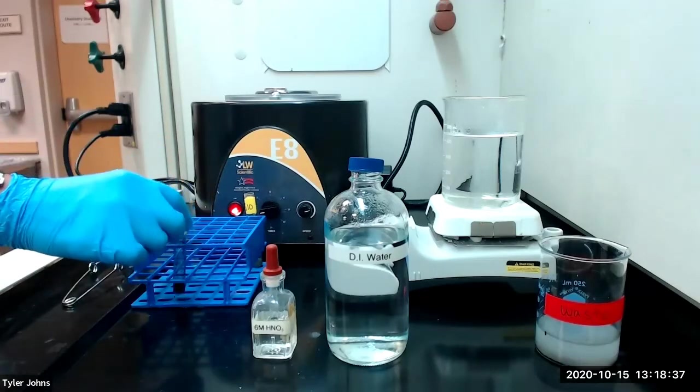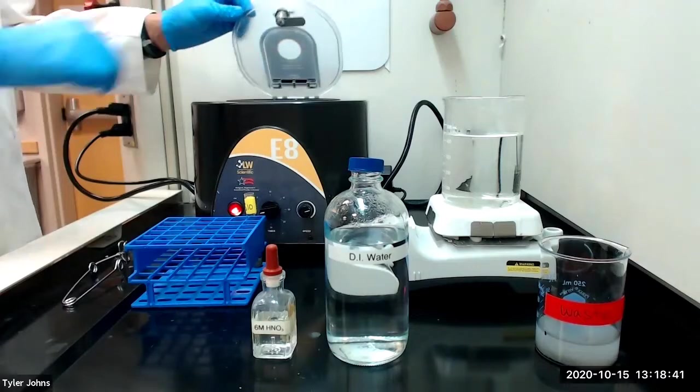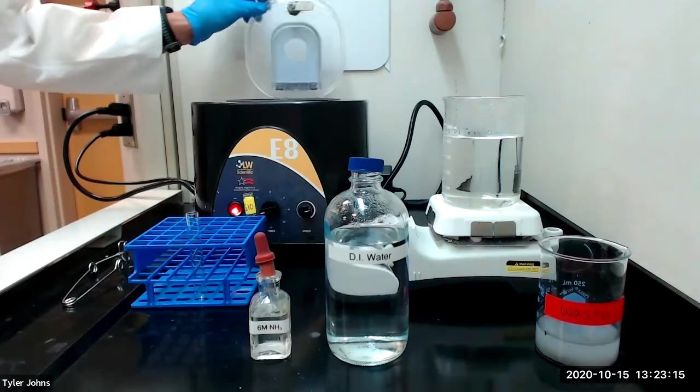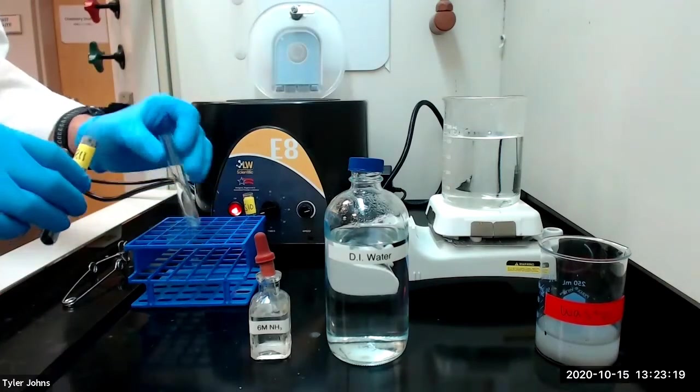We'll then centrifuge our mixture to separate the solution from the remaining dark colored sulfur. After centrifugation, we will decant the solution into a new test tube.